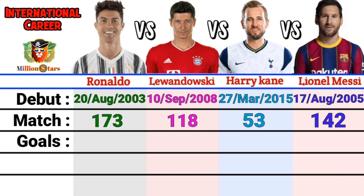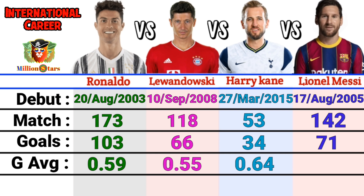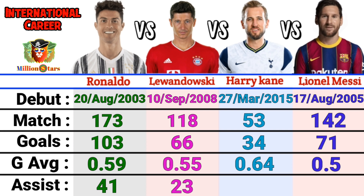International goals: Ronaldo 103, Lewandowski 66, Harry Kane 34, Lionel Messi 71. Goals average: Ronaldo 0.59, Lewandowski 0.55, Harry Kane 0.64, Lionel Messi 0.50. Assists: Ronaldo 41, Lewandowski 23, Harry Kane 13, Messi 51.